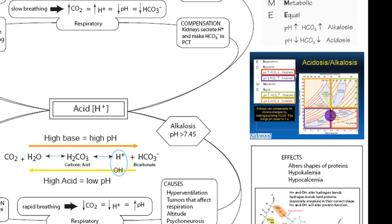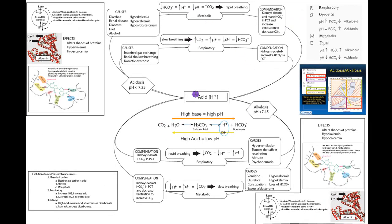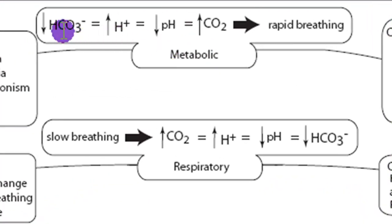The one last thing that I wanted to go through are these tiny diagrams at the top, and I wanted to point out that in metabolic acidosis, generally there's a decrease in bicarbonate, which increases acid, decreases pH, and increases CO2. So this is where we expect to see rapid breathing.